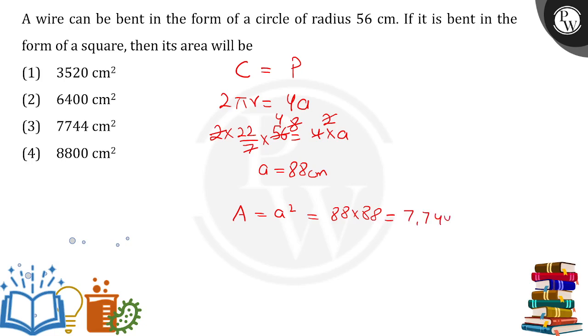88 × 88 = 7744, so the area is 7744 cm². This is our answer, which corresponds to option number 3.